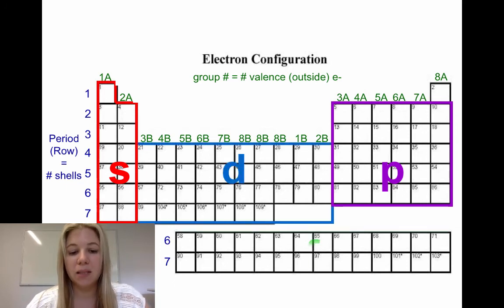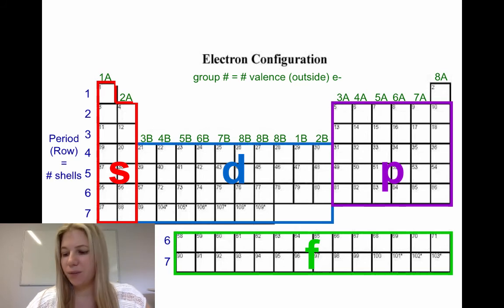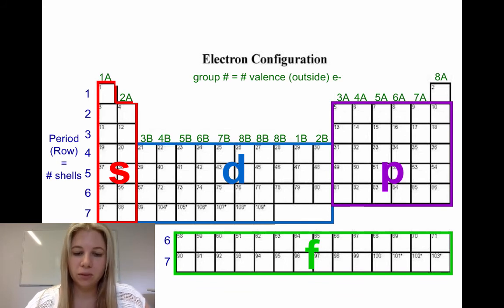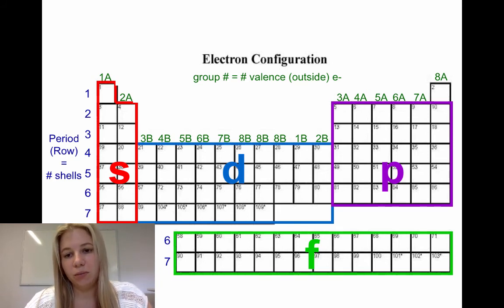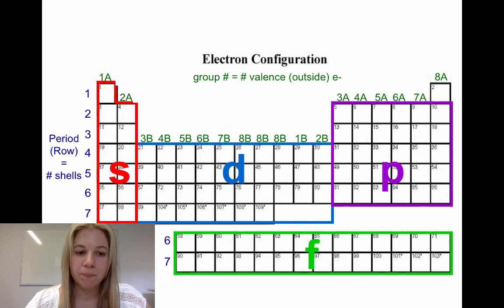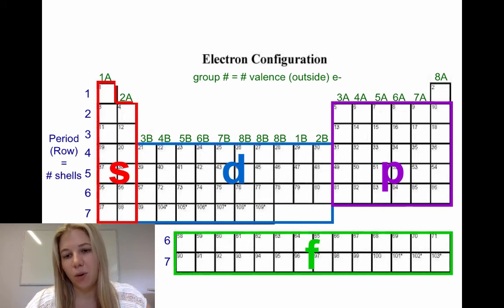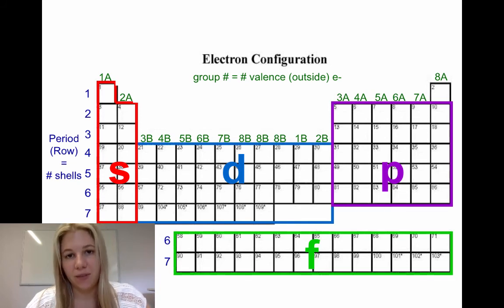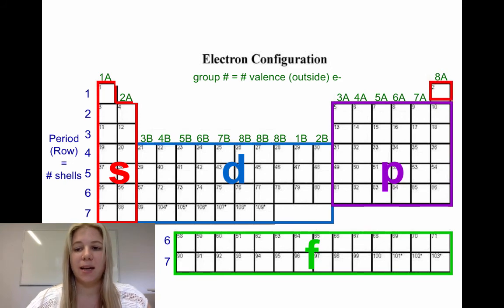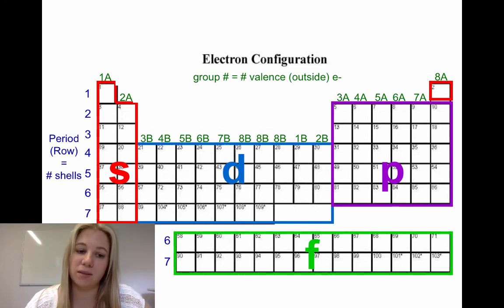The d orbital elements are in the middle block of the periodic table, and the f orbital elements are the two rows at the bottom. In the s block all valence electrons are in the s orbital; in the p block they're in the p orbital; in the d block they're in the d orbital; and in the f block they're in the f orbital. The one exception is helium — it's placed with the noble gases but actually belongs with the s block because it has two electrons in the s orbital.